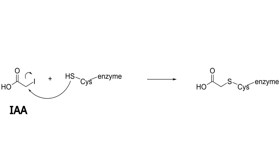Iodoacetic acid, or IAA, is an irreversible inhibitor of all cysteine peptidases. Iodoacetic acid alkylates the catalytic cysteine residue and is able to modify SH groups to prevent the reformation of disulfide bonds after the reduction of cysteine residues during protein sequencing.